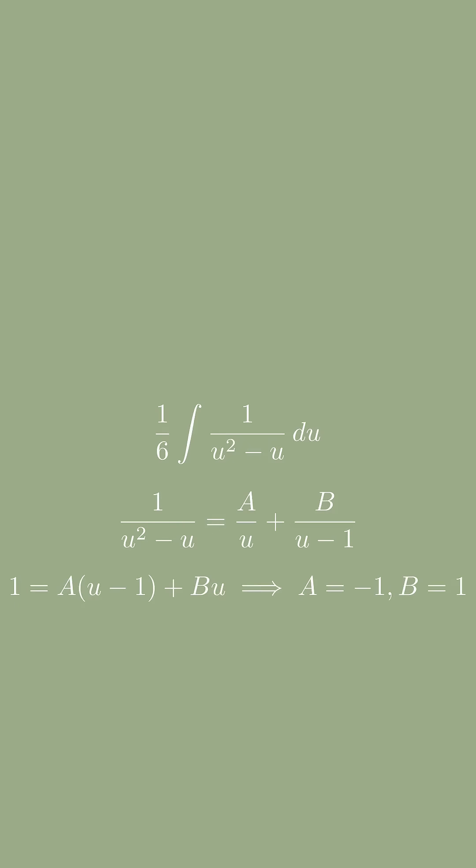So now the integral is 1 over 6 times the integral of 1 over u minus 1 minus 1 over u with respect to u.